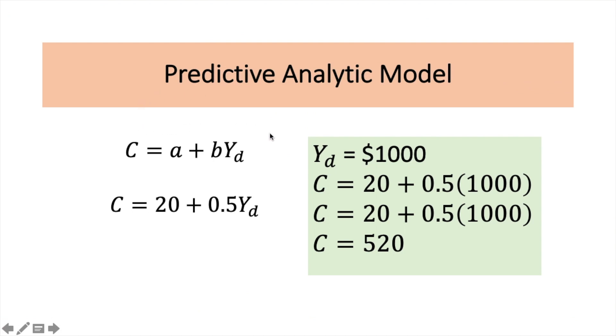Let me give you a bit more insights. So I again have here the consumption function. So now I've plugged in A, which is the intercept, it's 20. And I have the B, which is the slope, is 0.5.